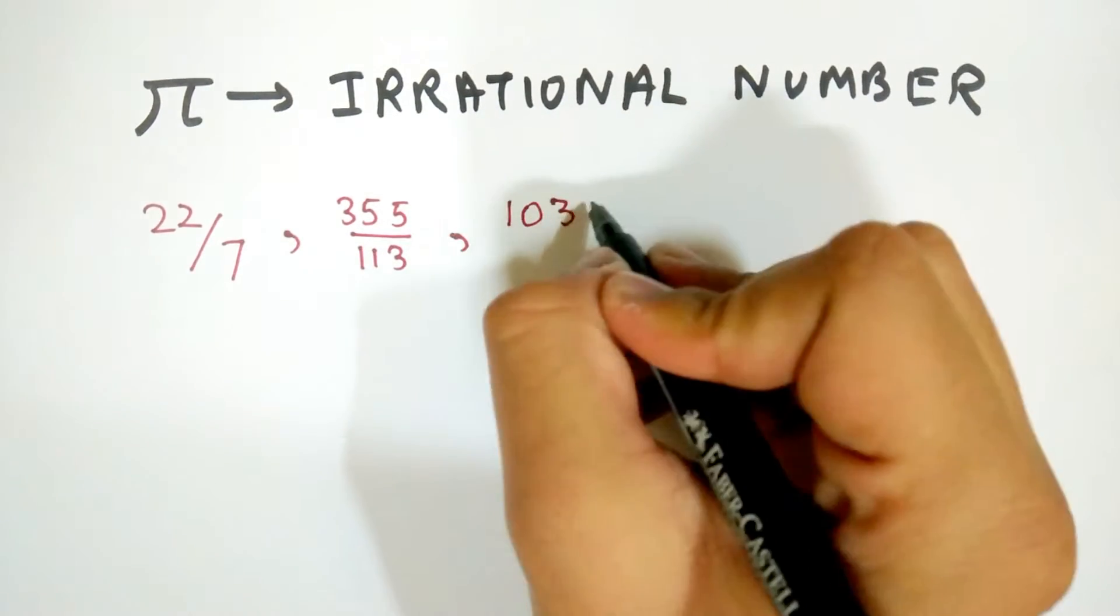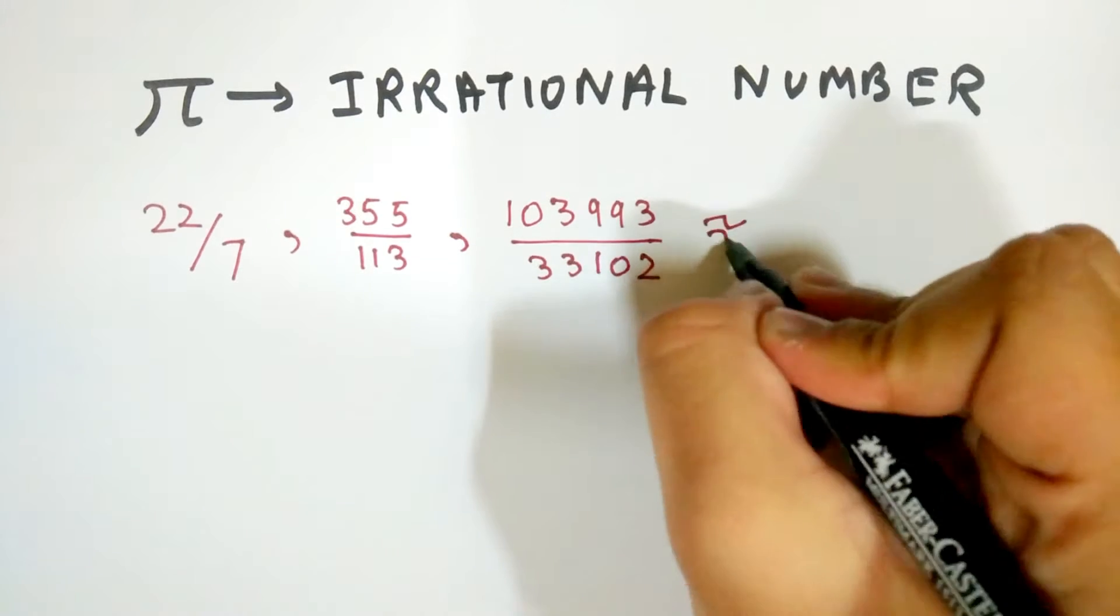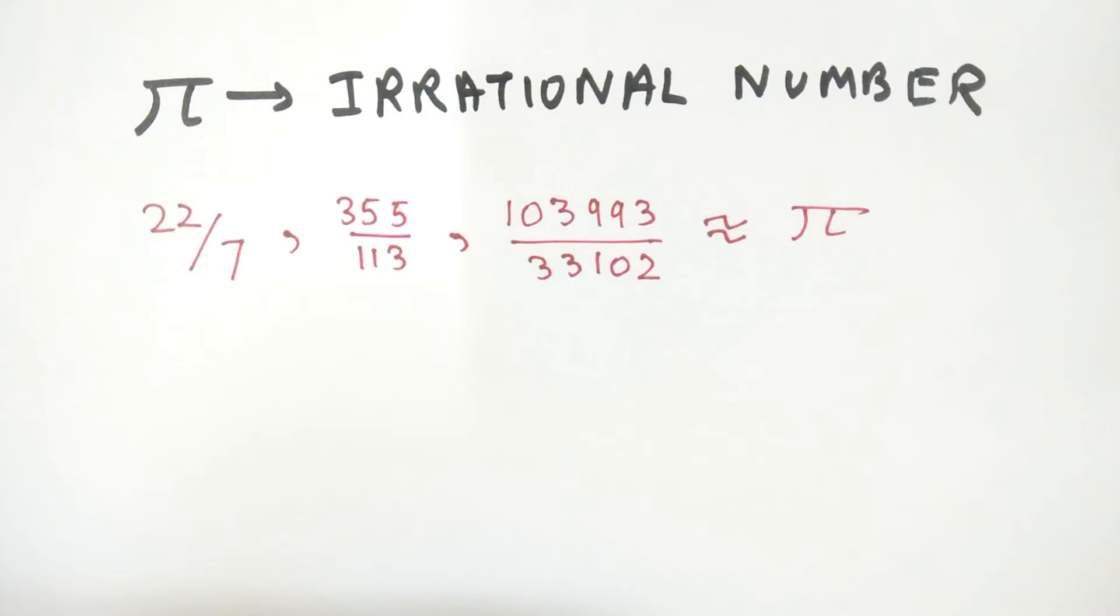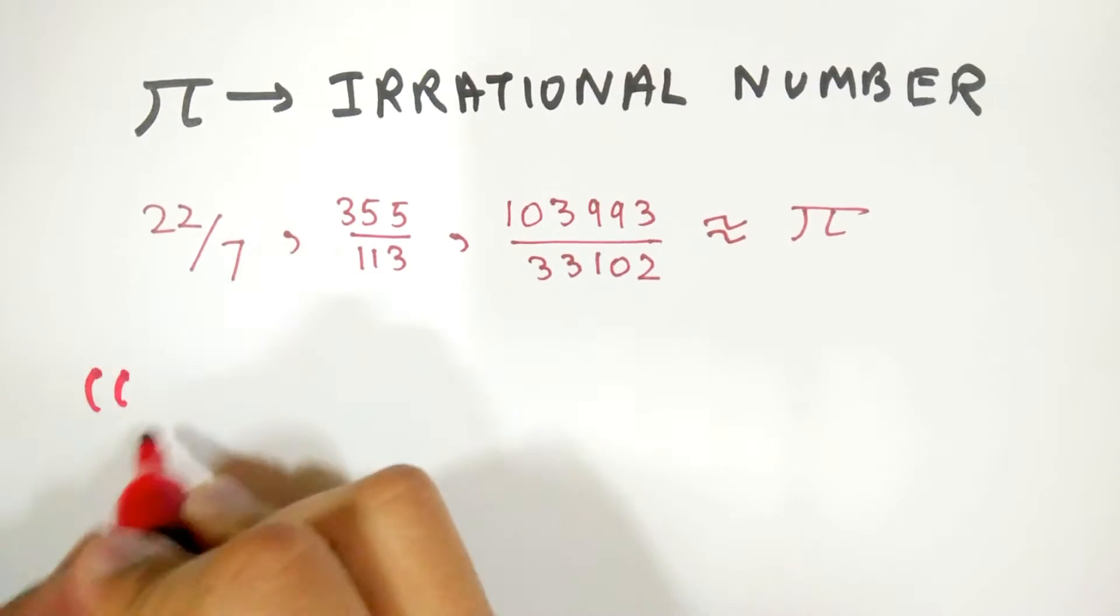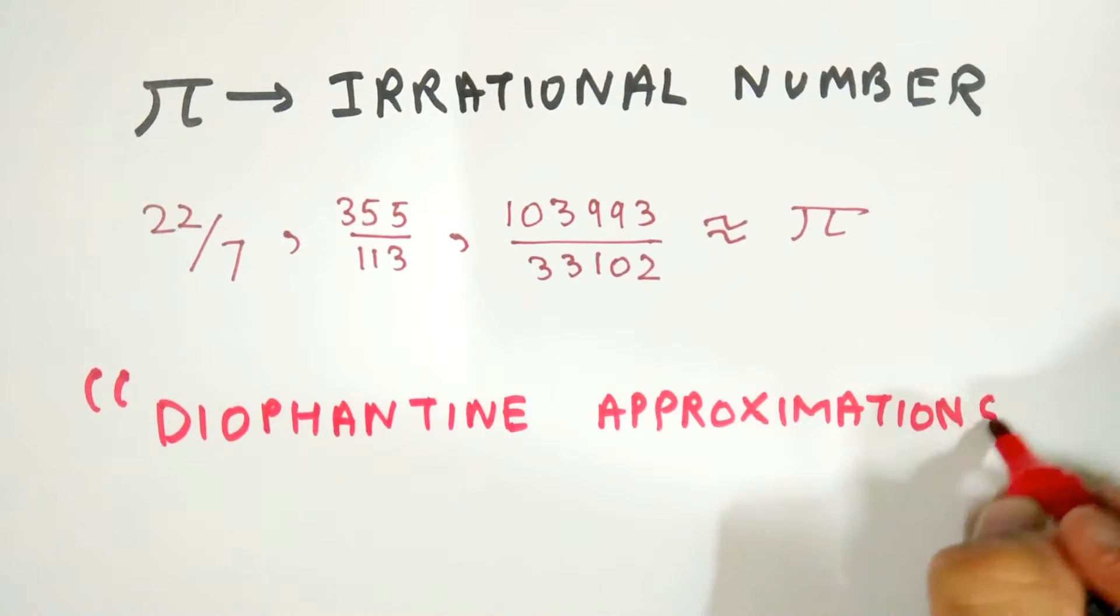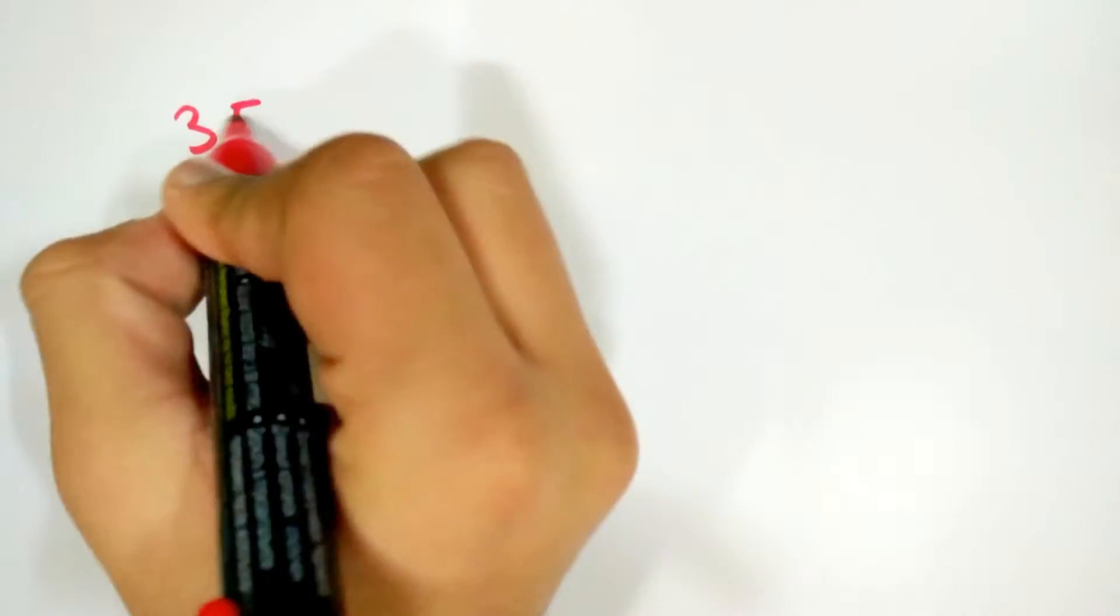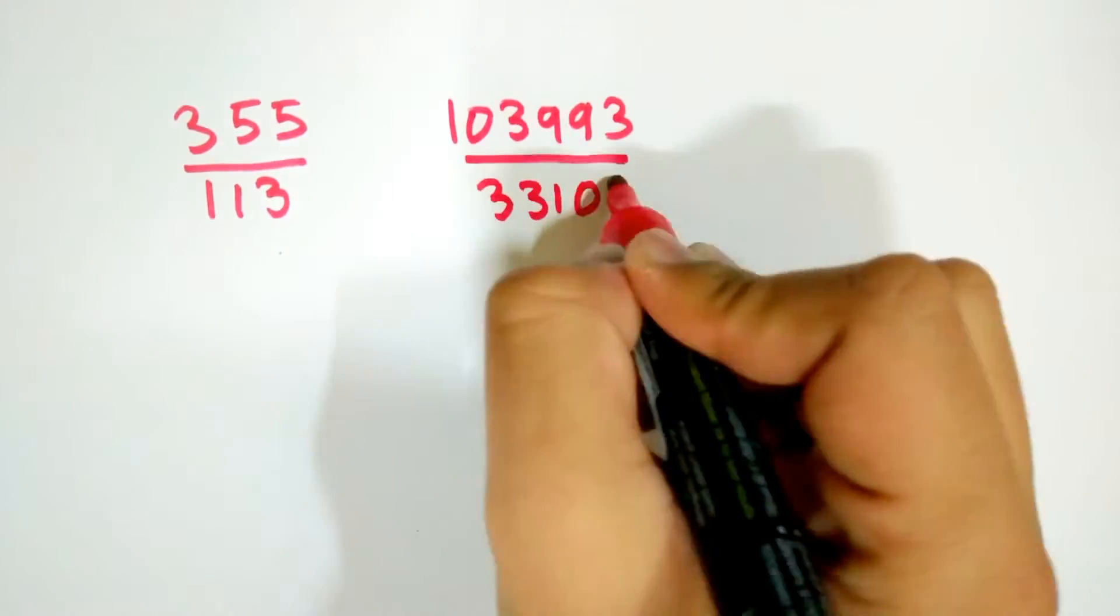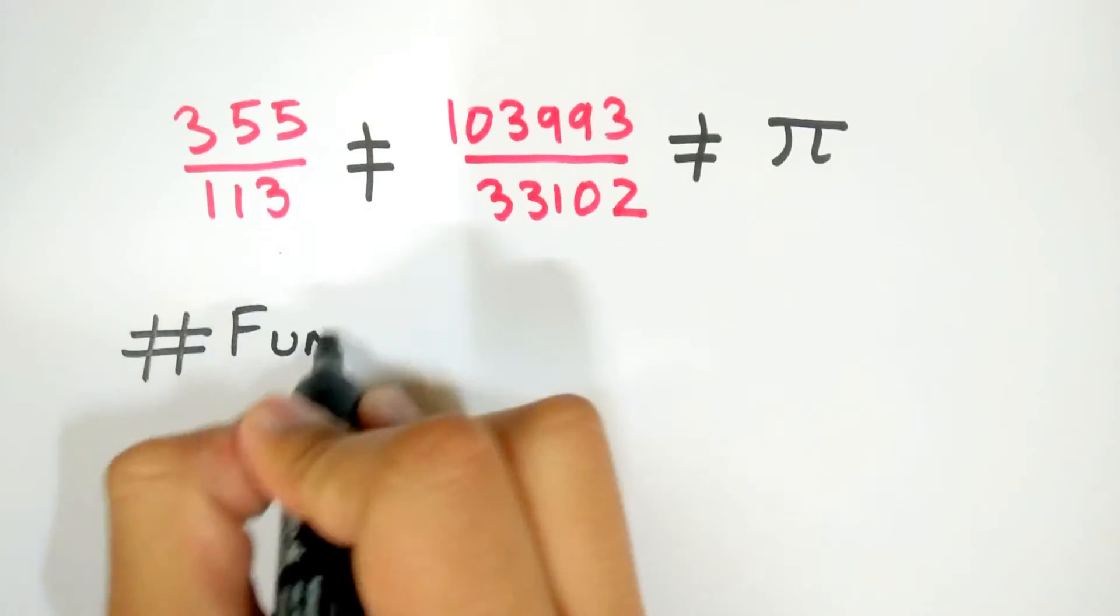22 upon 7 or 355 over 113 or 103993 over 33102 are just approximations of pi, or as they are called in number theory, Diophantine approximations. 355 over 113 is more precise, but it still fundamentally cannot be equal to pi.